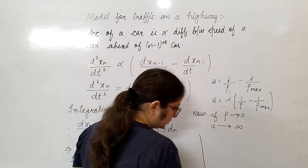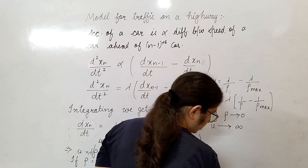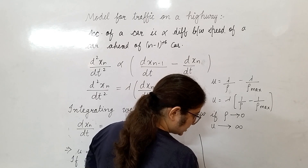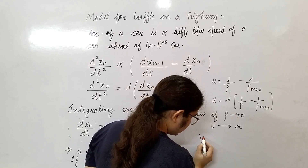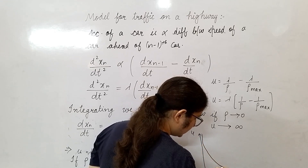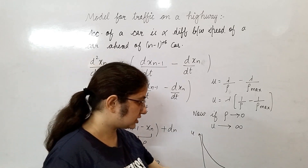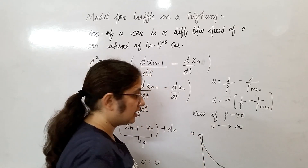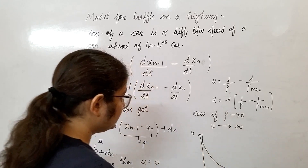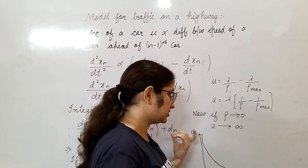Graphically you can observe that as your rho goes toward rho max or rho goes toward zero, your velocity goes to infinity as rho approaches zero — making an asymptote. So this is the relation between u and rho, that is traffic density and velocity.